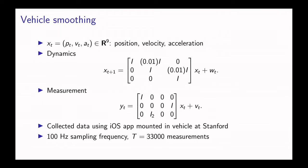We collected data using an iOS app mounted on a vehicle driving around the Stanford campus. As we said before, there's a 100 hertz sampling frequency, and we collected measurements for 330 seconds, resulting in 33,000 measurements, so T is somewhat large here.